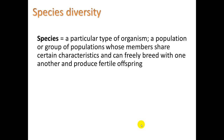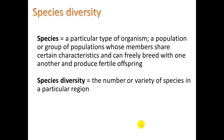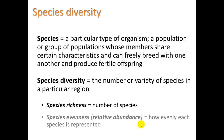Species means a particular type of organism — a population or group of populations whose members share certain characteristics and can freely breed with one another and produce fertile offspring. Species diversity means the number of species in a particular region. We can think of this in two ways: species richness, meaning the number of species, and species evenness, also called relative abundance, meaning how evenly each species is represented.